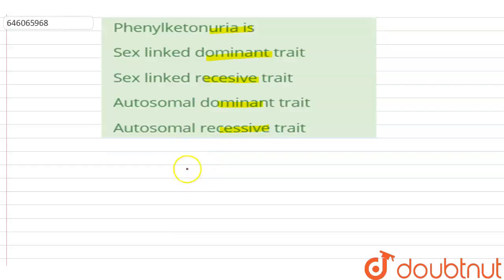An autosomal recessive disorder means two copies of an abnormal gene must be present in order for the disease or trait to develop.